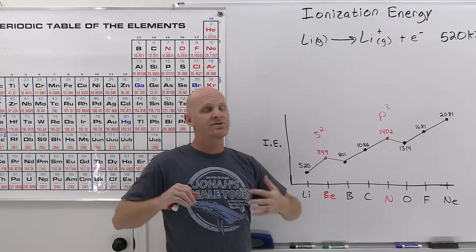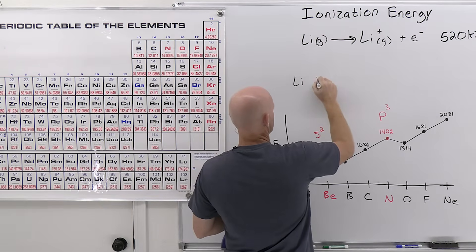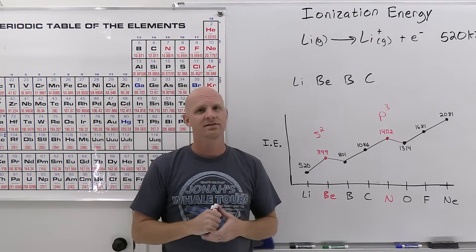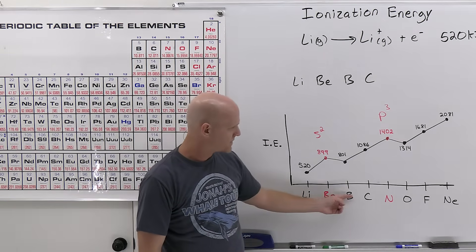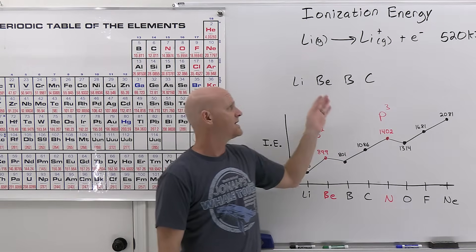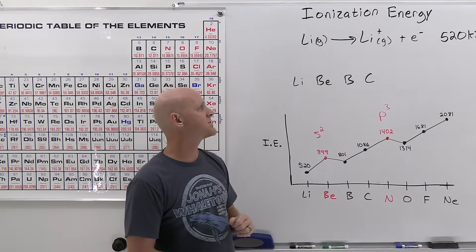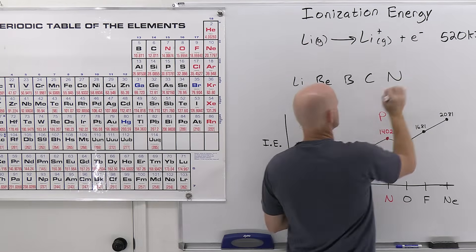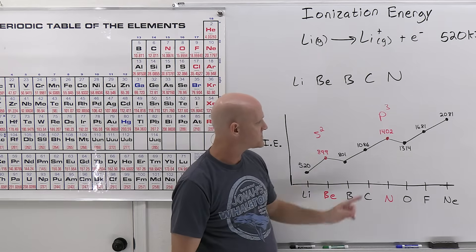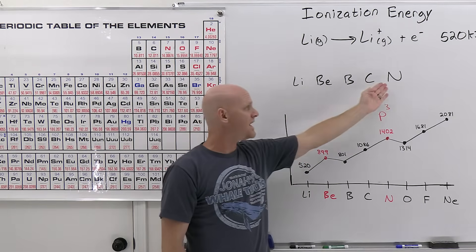A common exam question might involve either the general trend or the exceptions. For example, given lithium, beryllium, boron, and carbon, carbon has the highest first ionization energy — it's furthest right and the exception doesn't apply here. If we add nitrogen to the list, bells should go off — nitrogen is special — but the exception is nitrogen versus oxygen, not nitrogen versus carbon. Since nitrogen is furthest right in that set, nitrogen is the correct answer.